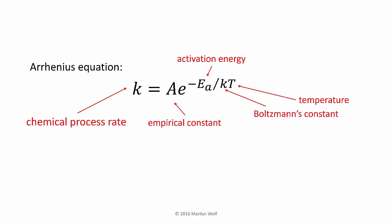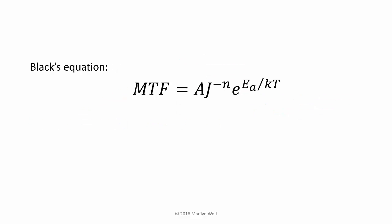The Arrhenius equation covers a broad range of physical mechanisms. One specific example is Black's equation, which is a well-known formula for the mean time to failure of wires that are carrying current.